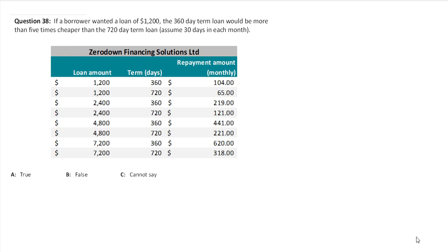So over how many months would you repay it? That would be 360 divided by 30, because it says assume 30 days.